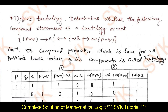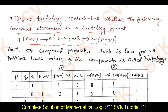Moving on to the solution, consider the given question: define tautology. I need to define tautology, and then determine whether the given compound statement is a tautology or not. A compound proposition which is always true for all possible truth values of its components is called a tautology. This is the definition of tautology.